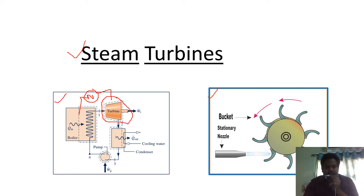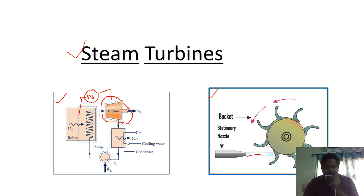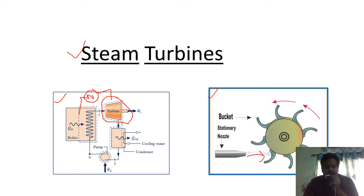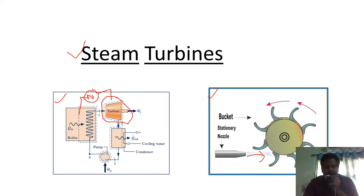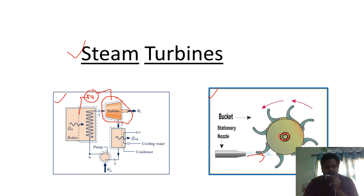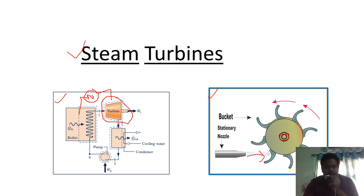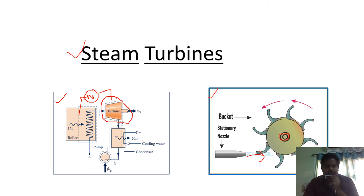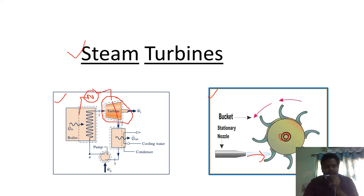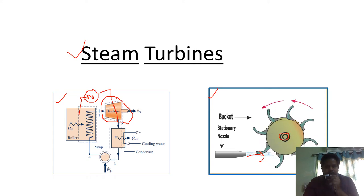As you can see in this figure, the steam will hit the turbine blades. This turbine is placed on the rotor, and that rotor will be connected to the generator so that power will be generated. This is the use of the turbine. In the turbine, steam will expand isentropically. You will see this in detail in the coming slide.